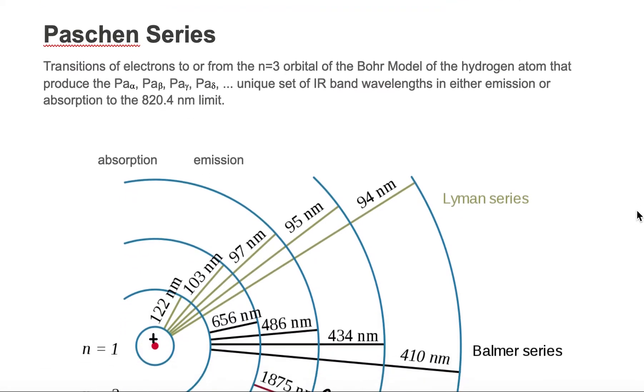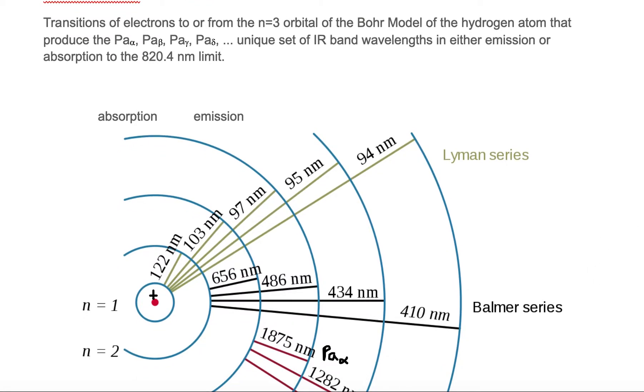So we're looking at the Bohr model of the hydrogen atom, which is shown here, which has only one proton and one electron to make it electrically neutral. The positively charged proton is in the nucleus and the electron, which is negatively charged,